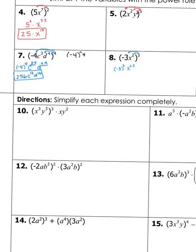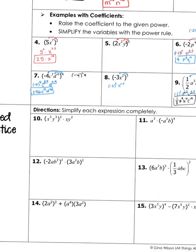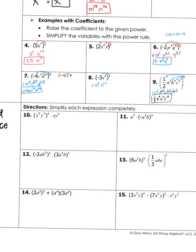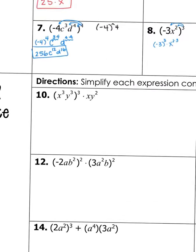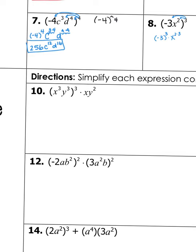For numbers 10 through 15, simplify each expression completely. Number 10 combines what you learned before with what we're doing now, putting both concepts together. We have x cubed times y cubed, all to the third power, times x times y squared. We have our power raised to our power in both cases.